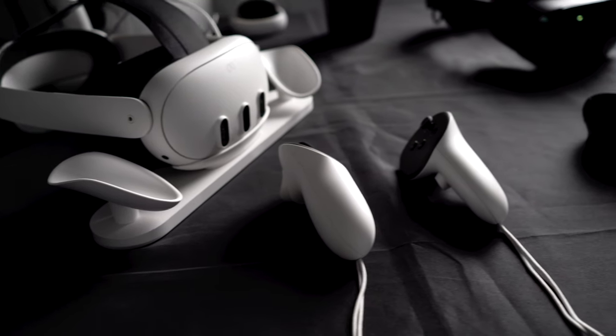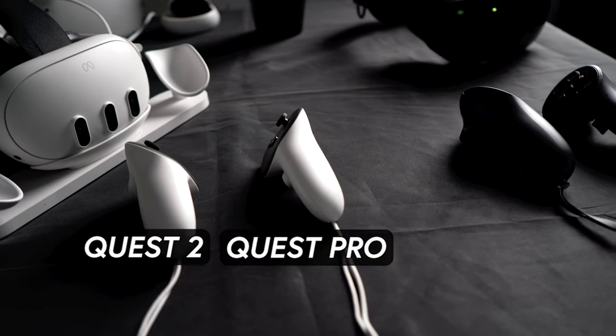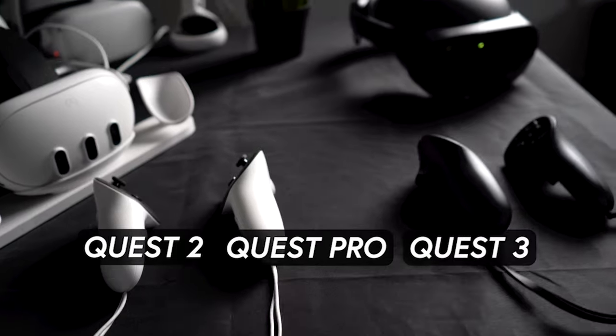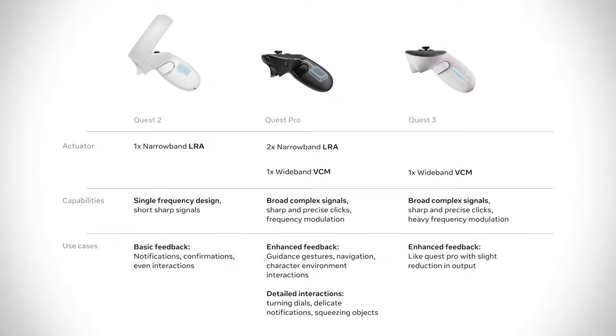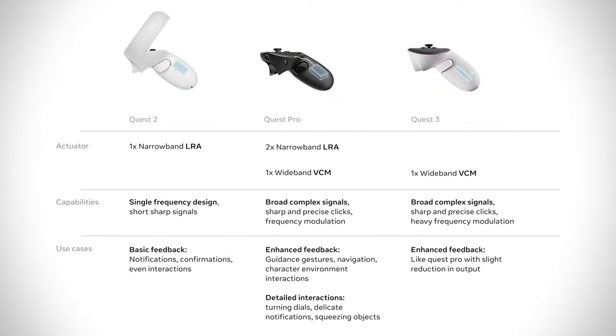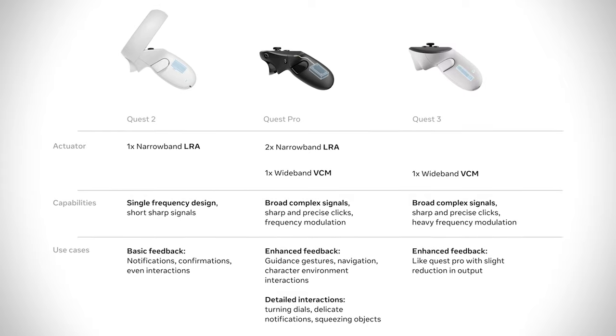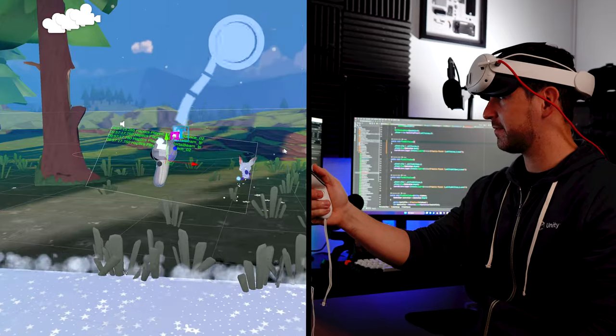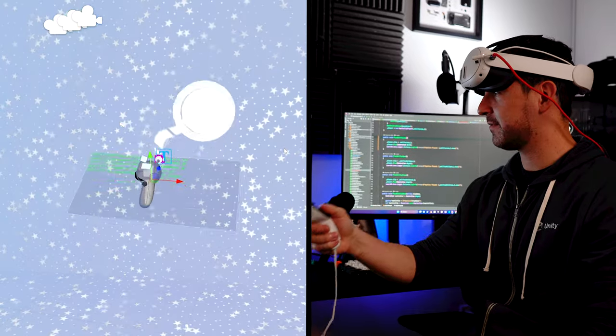What devices support the Meta Haptics SDK? Meta provides support for the Quest 2, Quest Pro, and the recently released Quest 3 device. Know that the motors that produce vibrations between each controller varies depending on the controller type. However, the SDK handles this seamlessly to make sure that the Meta Haptic SDK is backward and also forward compatible. Let's go ahead and jump into my computer and start working on it.